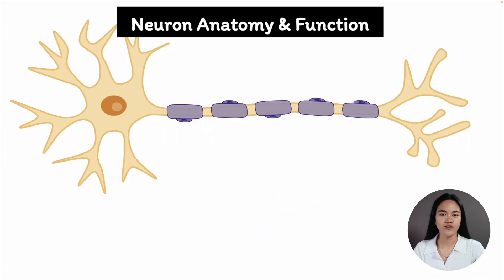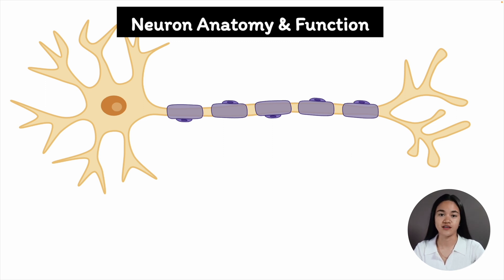In this video, we're going to cover neuron anatomy and function. We're going to break down what a neuron is, how the nervous system processes information, and the three functional classes of neurons.